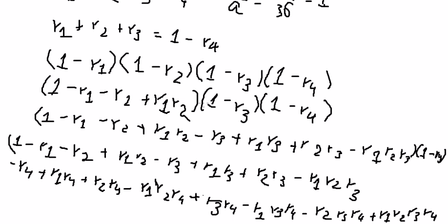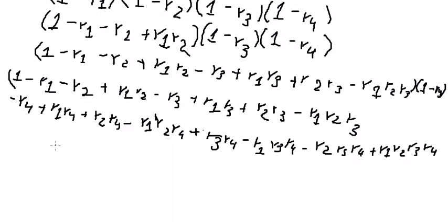So now we can apply Vieta's theorem here. We have r₁ + r₂ + r₃ + r₄, that's negative b over a, and we just calculated that's about number 1.